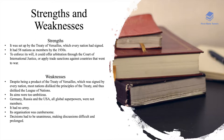When it comes to broadly the strengths and weaknesses of the League, in terms of strengths: firstly, it was set up by the Treaty of Versailles which every nation signed, meaning it had the cooperation of 58 nations who were members by the time it reached the 1930s. To enforce its will it could offer arbitration through the court of international justice or apply trade sanctions against countries that went to war.